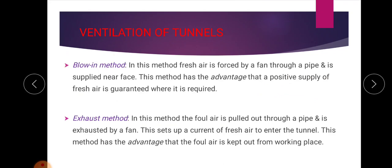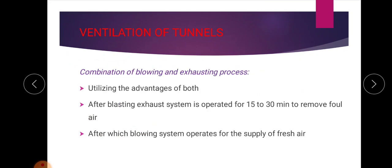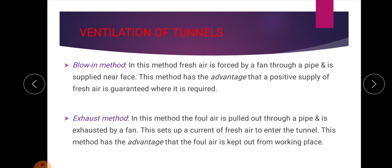Ventilation of a tunnel can be done by three methods. The first is the blow-in method. In this method, fresh air is forced by a fan through a pipe and is supplied near the tunnel face. This method has the advantage that a positive supply of fresh air is guaranteed where it is required.